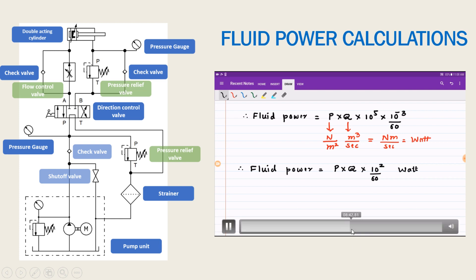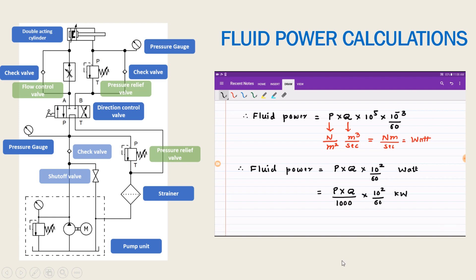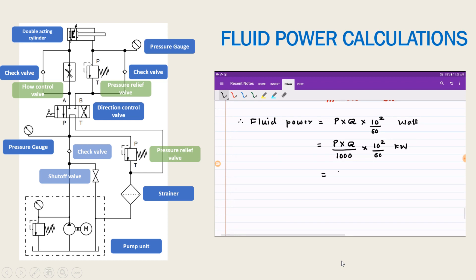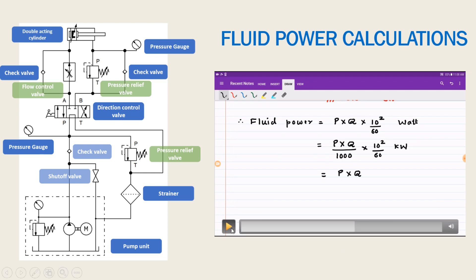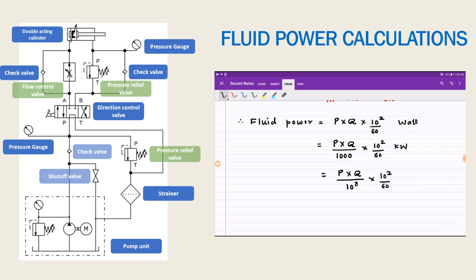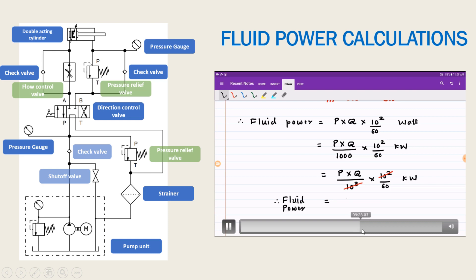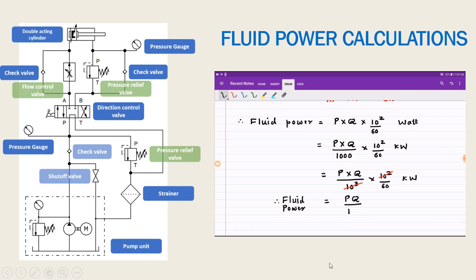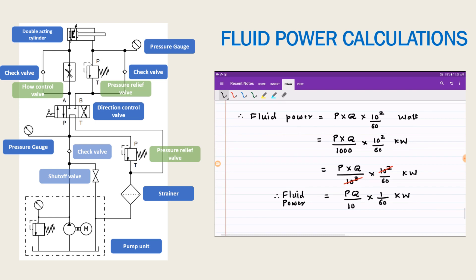This result is in watt. To convert to kilowatt we divide by 1000, so we have p times q times 10 to the power 2, divided by 60, then divided by 1000. In the denominator we have 60 times 10, which is 600. Ultimately, fluid power equals p times q divided by 600, in kilowatt.